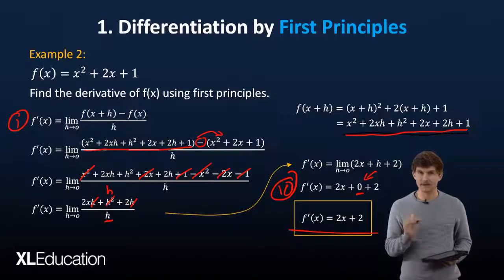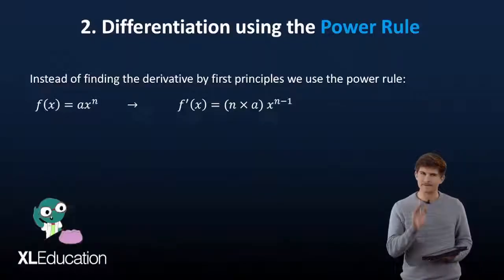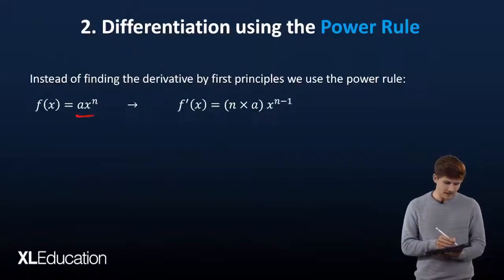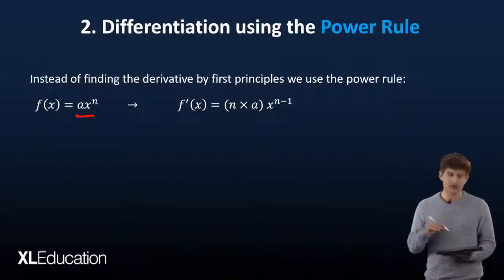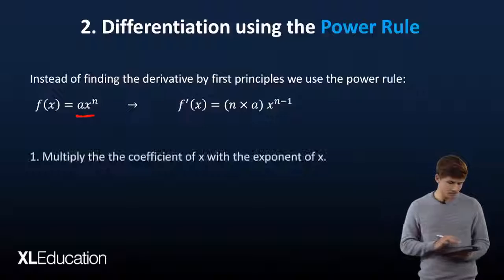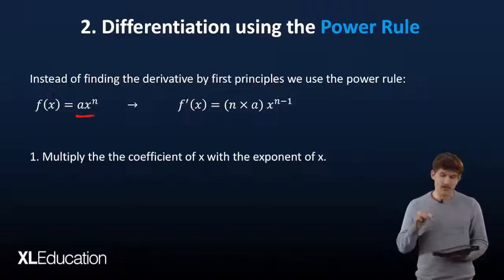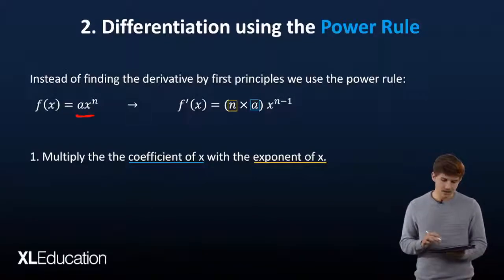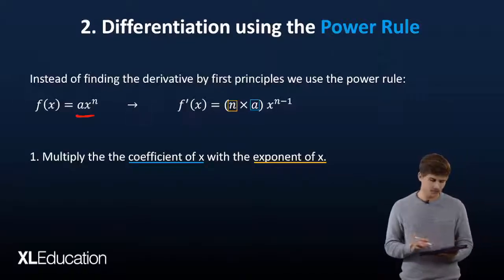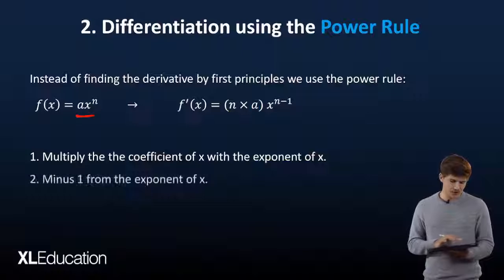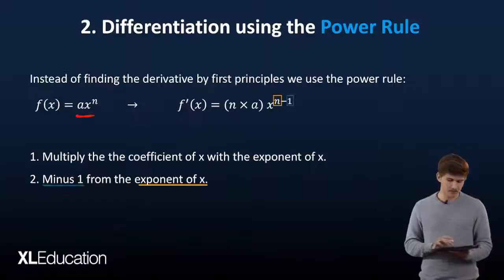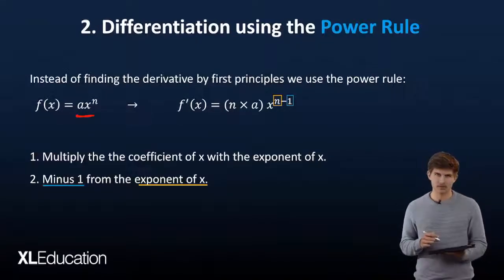Let's move on to the next section of differentiation: the power rule. The power rule uses a very basic function. Instead of finding the derivative using first principles, we use simply that given the fact that you know what f(x) is, we can find what the derivative is using the following two rules: multiply the coefficient of x with the exponent of x. Let's write that out with colors. The coefficient of x is in blue there, a, then the exponent of x is n in yellow. The final step to this whole process is just to find minus 1 from the exponent of x.